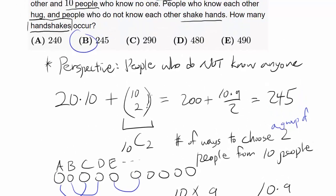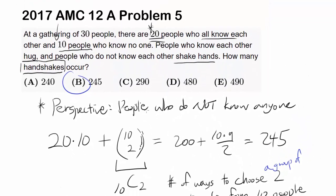So the answer is 200 plus 45 or 245. And once again, our answer is B.